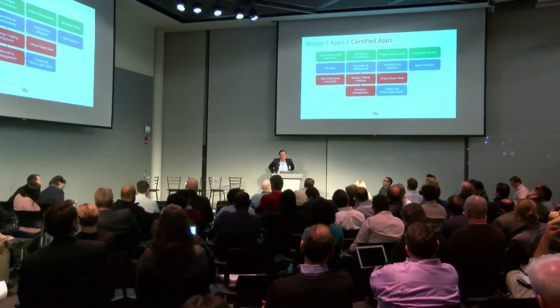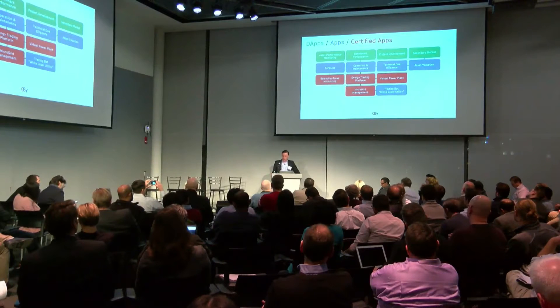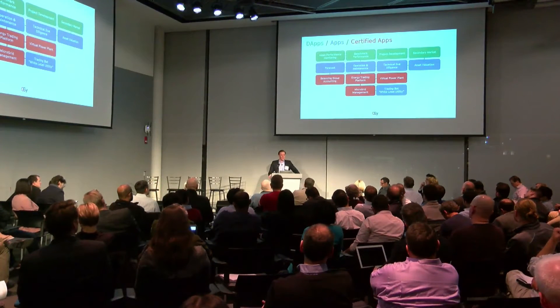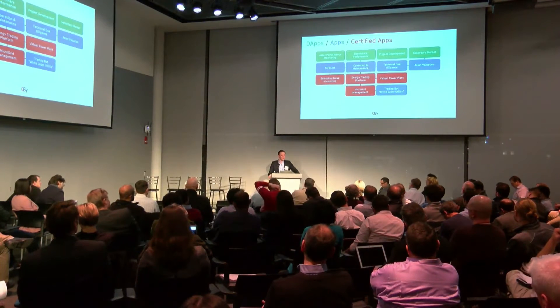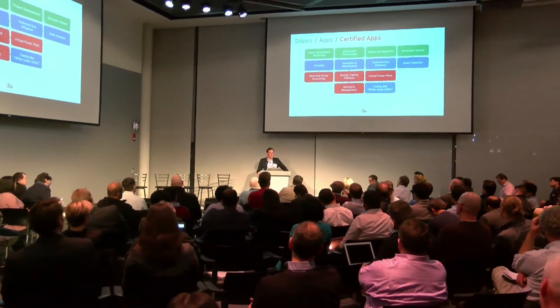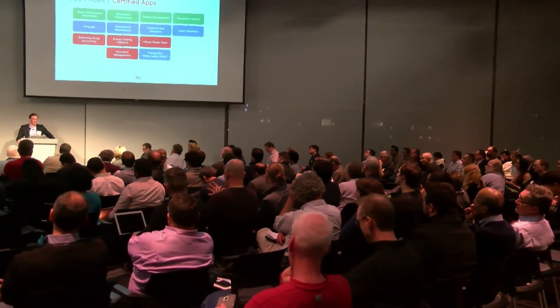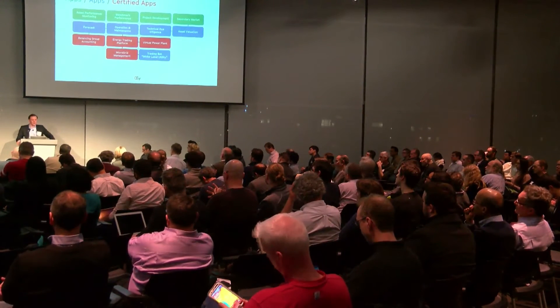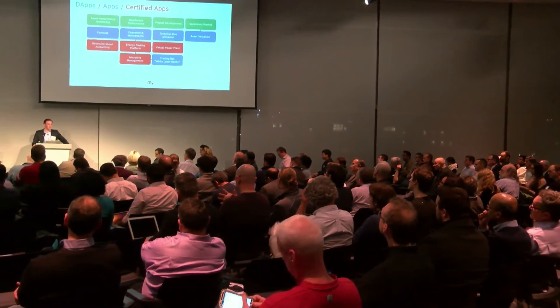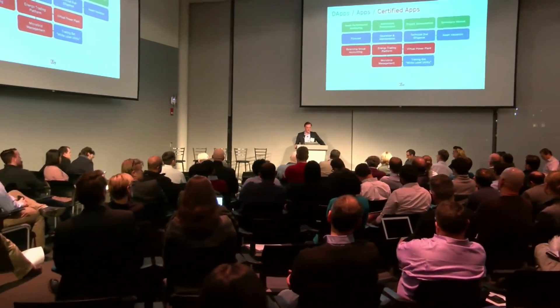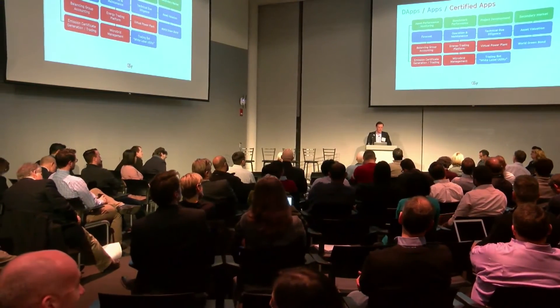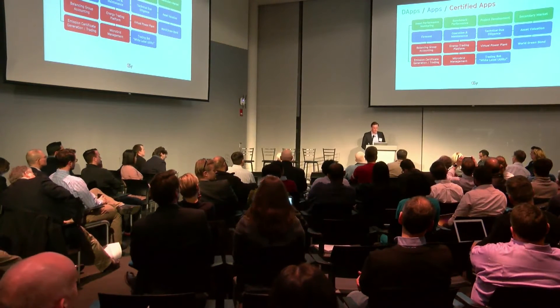Other applications include forecast, energy trading platform, virtual power plants, balance group accounting, microgrid management, and a trading bot we call the white label utility. We've designed a trading bot — it's not possible to deploy it yet — but the idea is that someday every household can download a trading bot that makes that house a single trader in the market. You can tell it you only want green energy or just the cheapest energy. You could also download it on a Tesla, and the Tesla trades by itself when connected to the grid. There are also applications like emission certificate generation, which is no more than 20 lines of code.